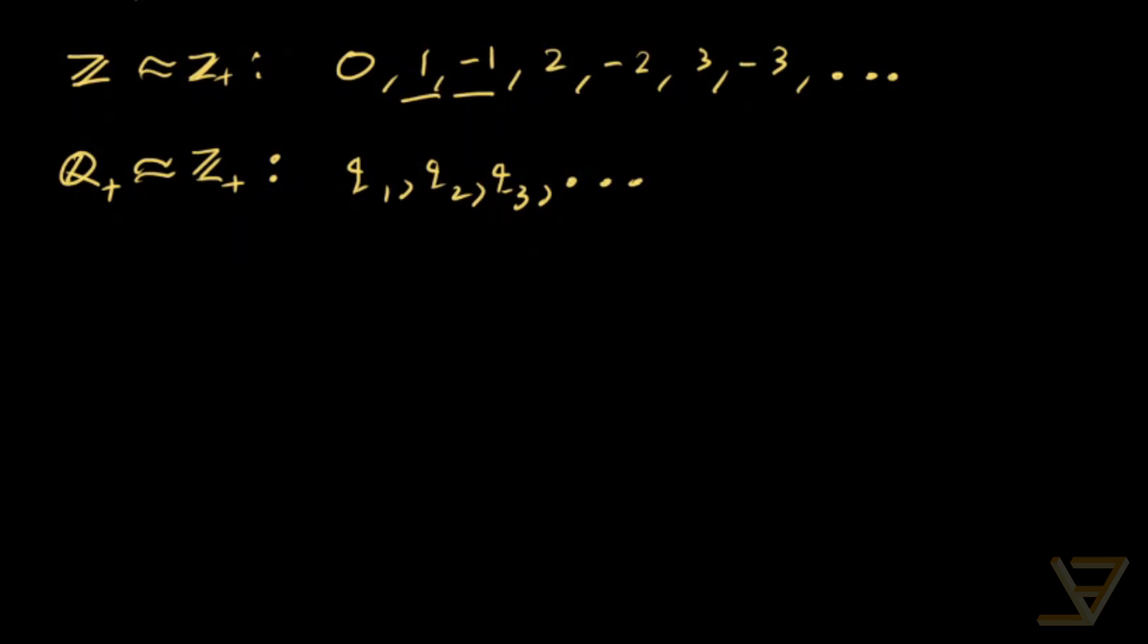So all we have to do is the following for the rationals. We do zero, q1, negative q1, q2, negative q2, q3, negative q3. And we just keep going like that. And that way we have shown that the rationals, all of them, are also in bijection with the positive integers.